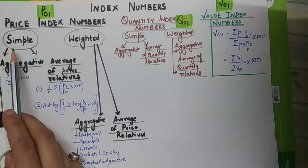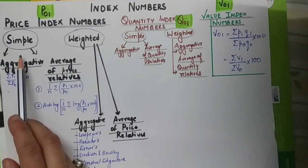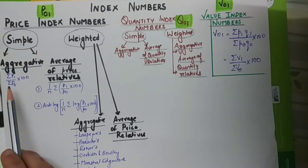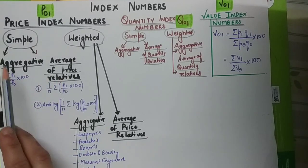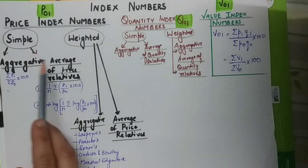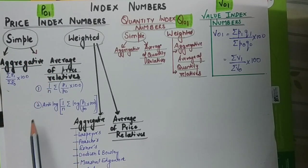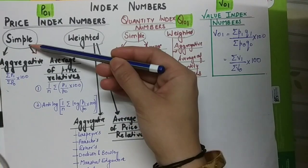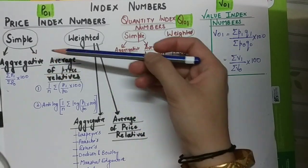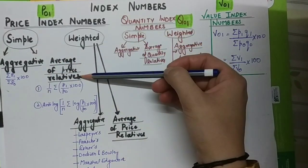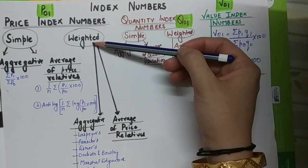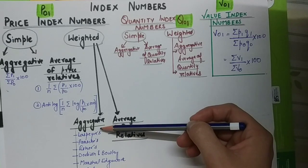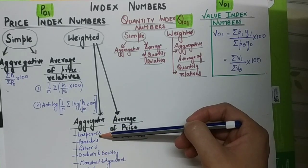In the case of the simple method, it is further classified into two categories: the simple aggregative method and the simple average of price relatives method. Till now we have covered the simple aggregative method, the simple average of price relatives method, and the weighted aggregative method, in which we covered seven different methods.